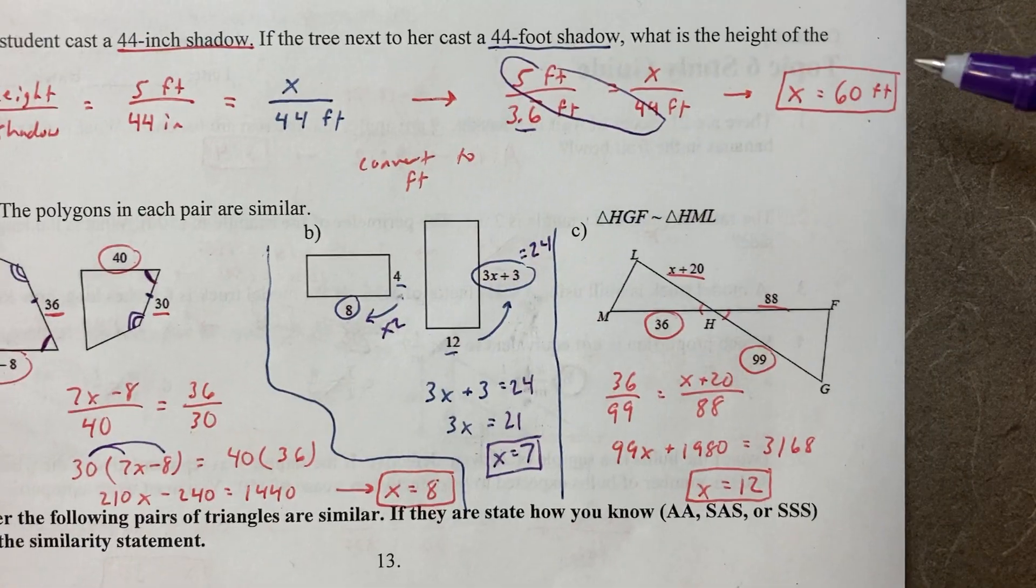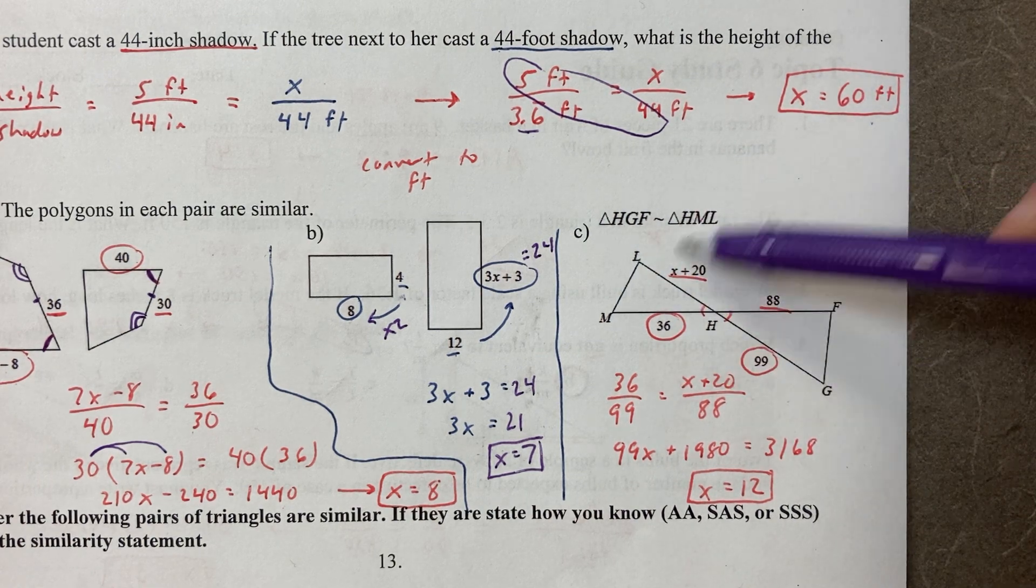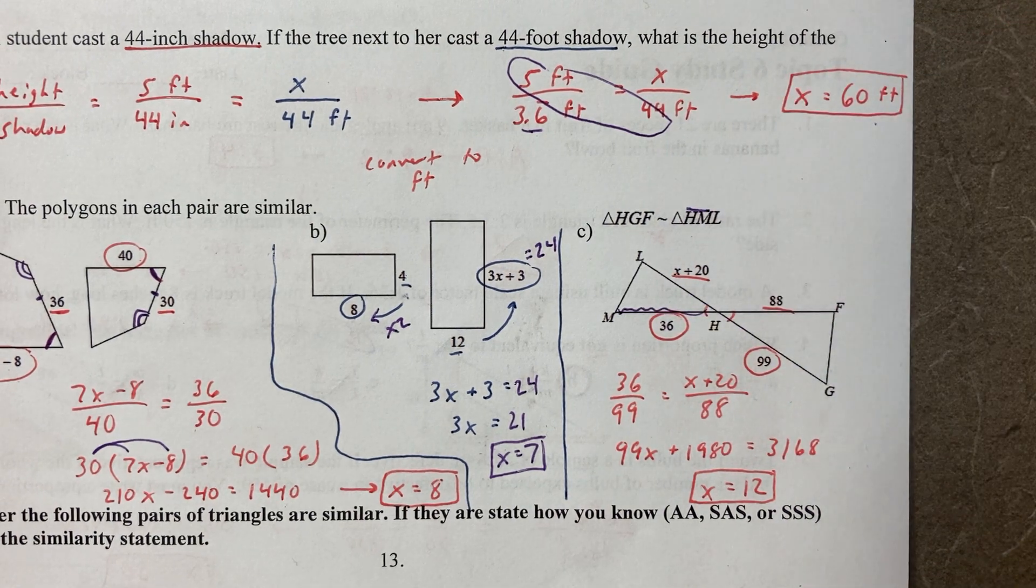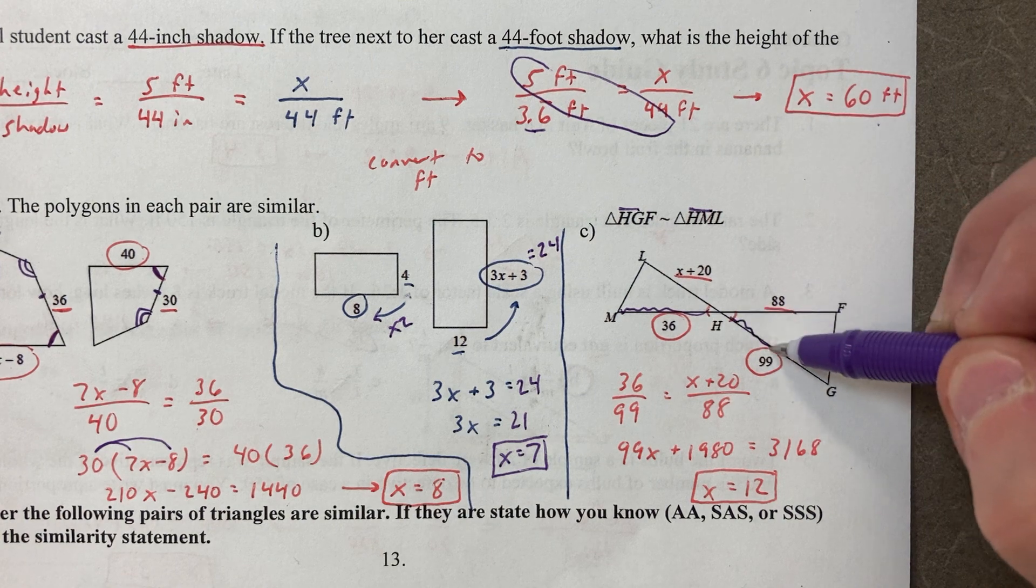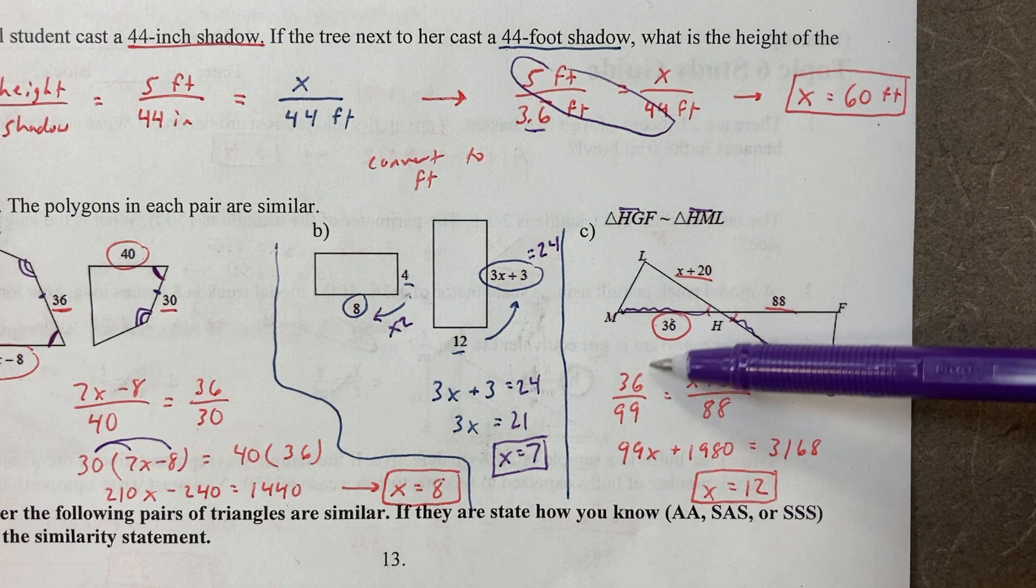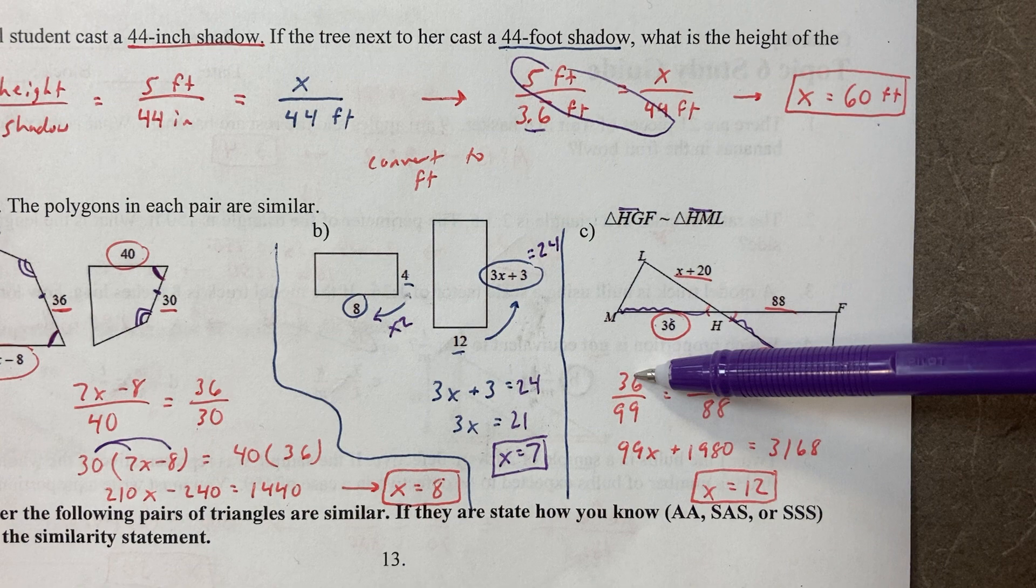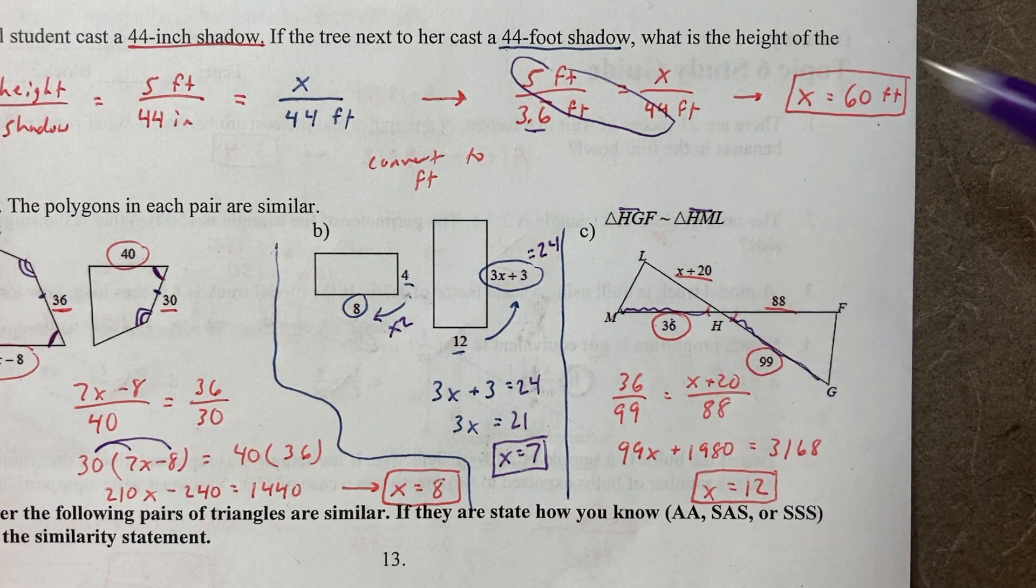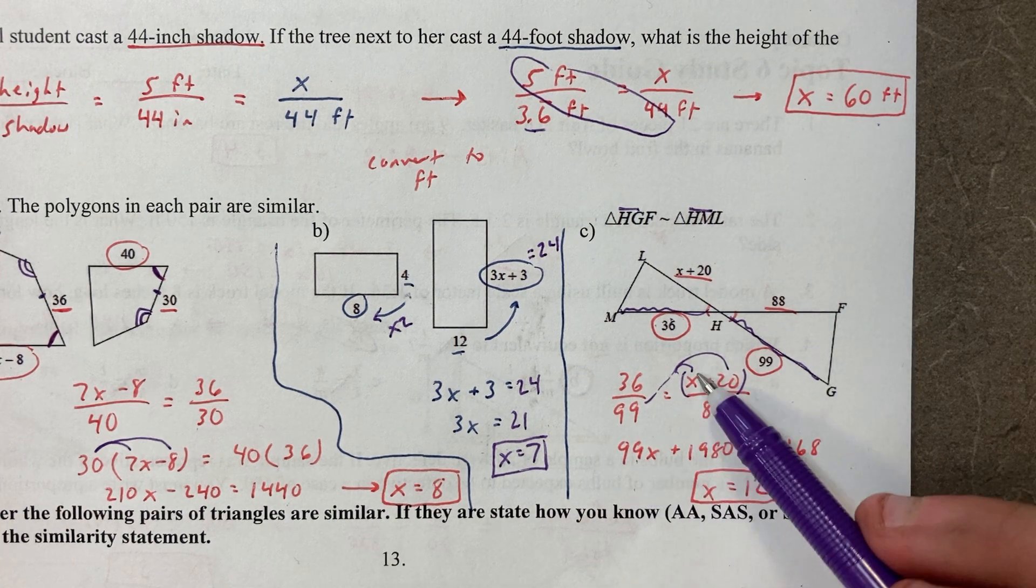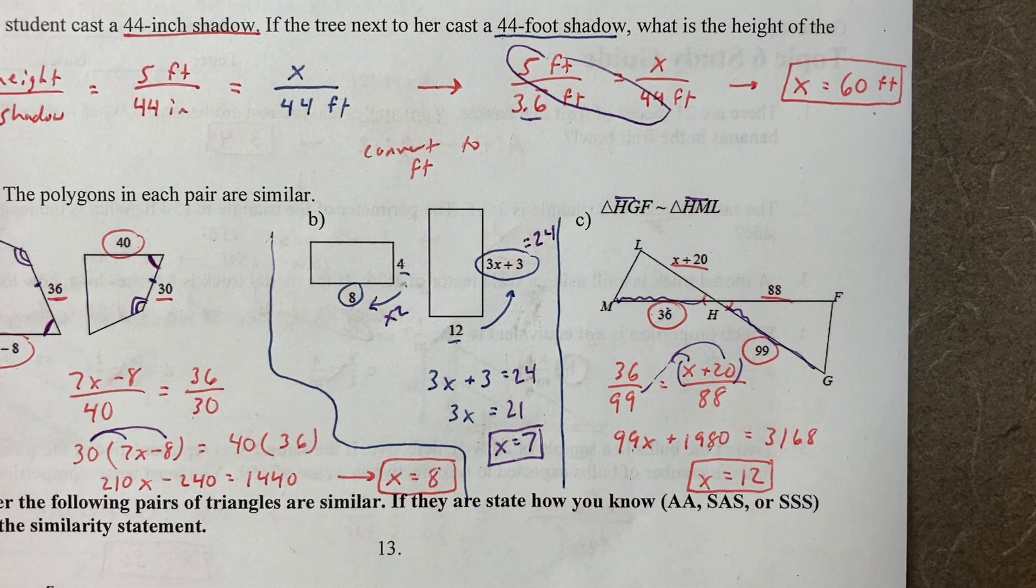Next. It does help that we do get the statement. So if you're struggling with matching things up, know that MH would match up with HG. So I circled them. So now I can make a nice proportion. 36 is to 99, and it's x plus 20 is to 88. Cross multiply. Don't forget to distribute the 99. Work it out from there. You can get x equals 12.